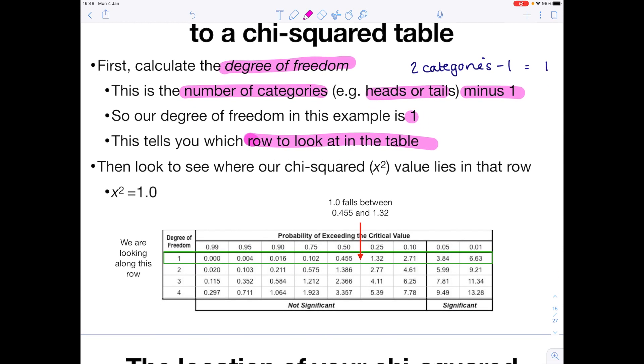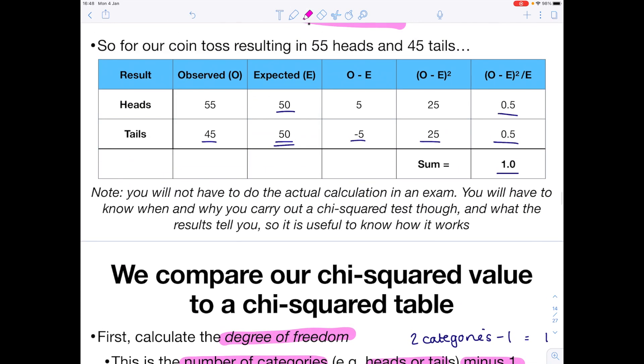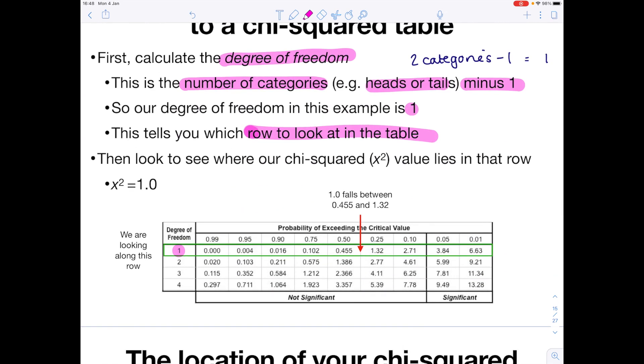So because we've calculated 1 as our degree of freedom, we know we're looking along this first row. Then go back, have a look at our calculated chi-squared value, which remember was 1. And we're looking to see where that 1 falls along that first row. And as the arrow points out, it falls here.